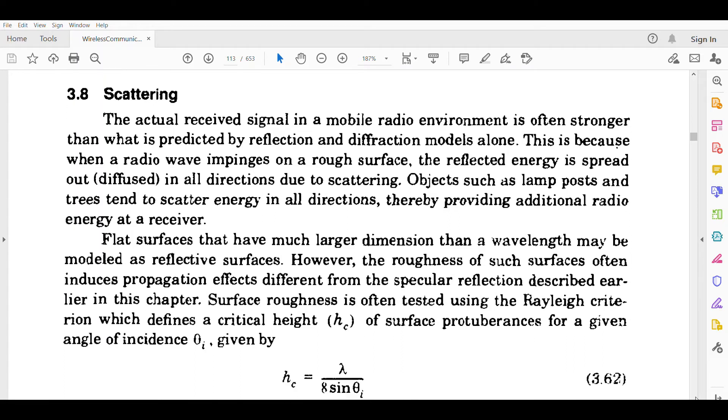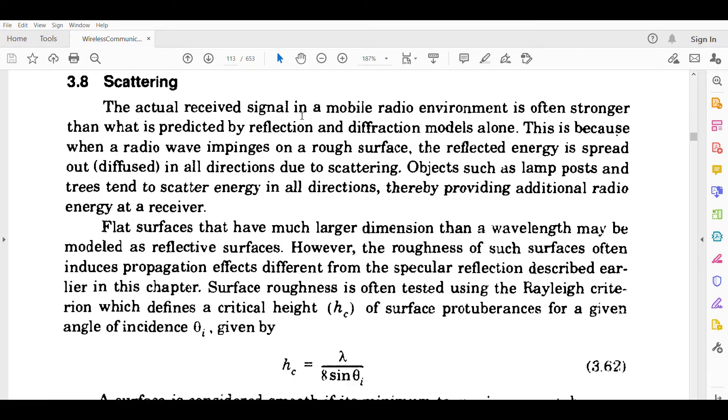Our next topic is scattering. The actual received signal in a mobile radio environment is often stronger than what is predicted by reflection and diffraction models alone. This is because when a radio wave impinges on a rough surface, reflected energy is spread out in all directions due to scattering. Objects such as lamp posts and trees tend to scatter energy in all directions, thereby providing additional radio energy at the receiver.